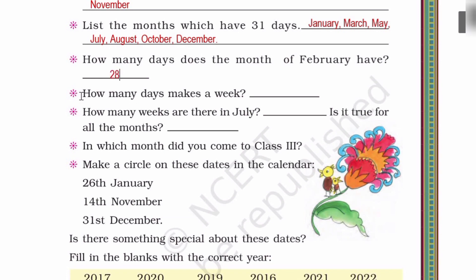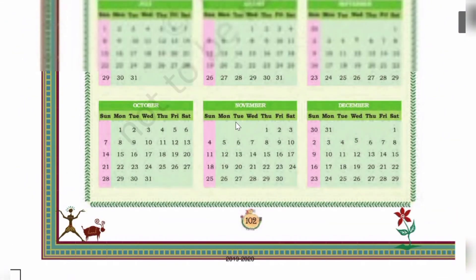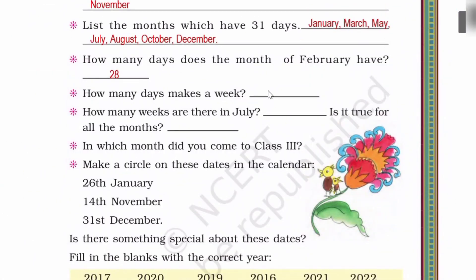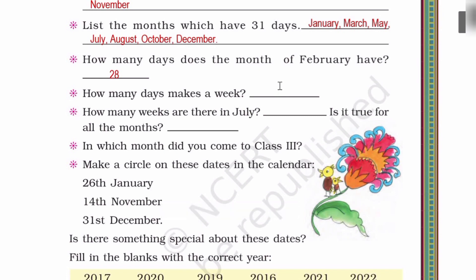Now next, how many days make a week? Sunday, Monday, Tuesday, Wednesday, Thursday, Friday, Saturday. Total 7 days make a week. So here you have to write 7.